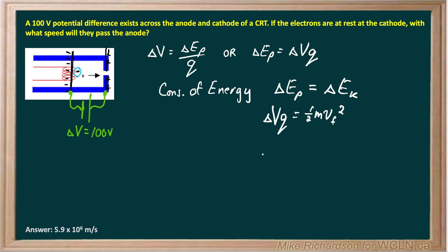If I solve that for v final, do a little algebra. 2 times the change in voltage times the charge that's moving across the gap, divided by the mass of the charge, all square rooted, should give me my velocity.